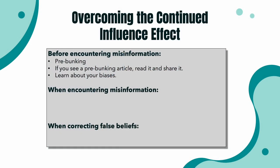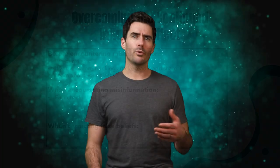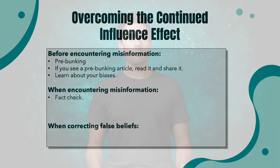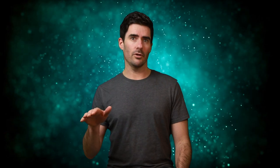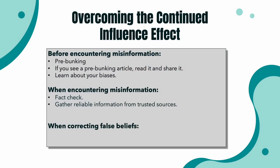When you encounter misinformation, the best thing you can do is fact check. We can't erase the memory of misinformation from our brain, but we can try to make correct information more prominent in our mind. The best way to do that is to gather reliable information from trusted sources — the more information, the better, because it'll help consolidate the memory. A study published in the British Journal of Psychology also showed that correcting misinformation is easier one day after reading it than one week after reading it. So if you encounter something online that seems a little fishy, it's best to fact check it as soon as you can.